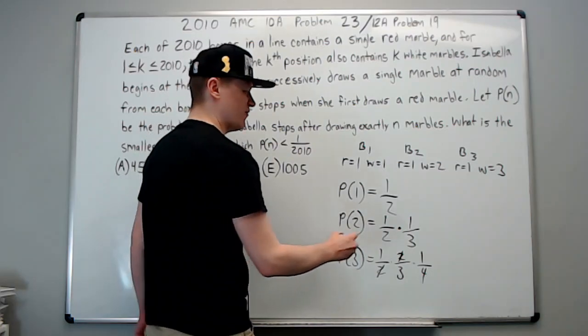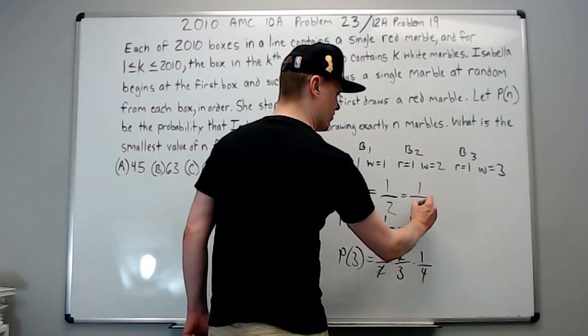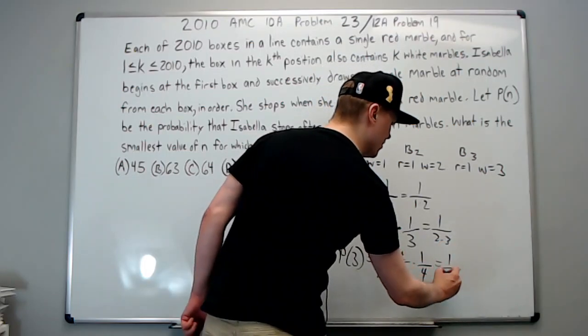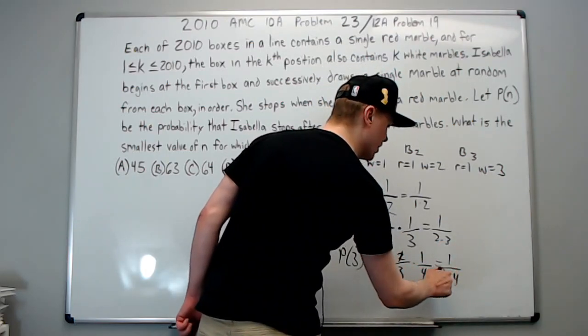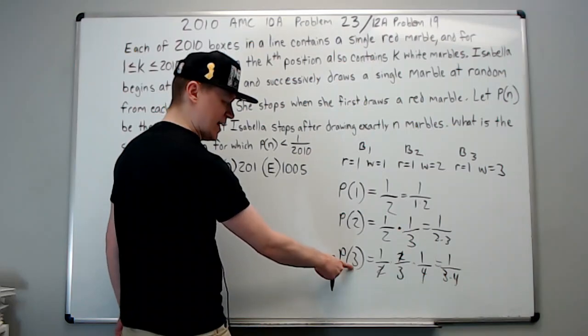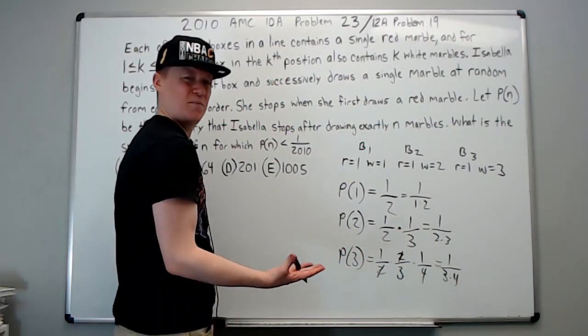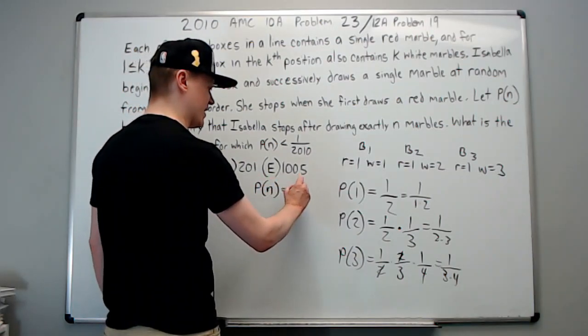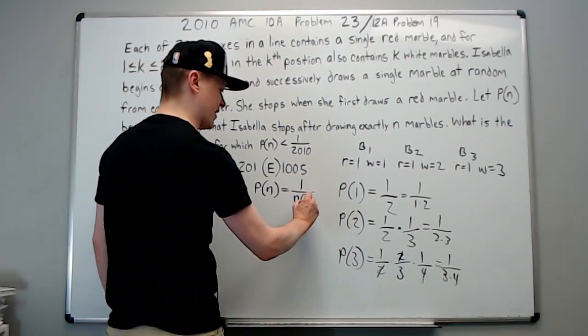If I thought of it that way, one over one times two, one over two times three, one over three times four, then it looks like the n is the first number and the second number is one more than that, meaning that it appears to be that P(n) is one over n times n plus one.